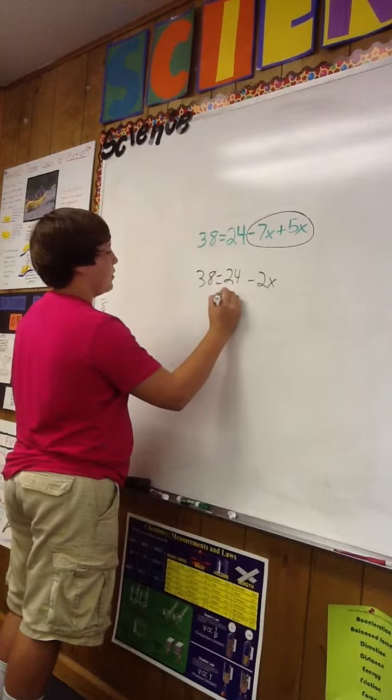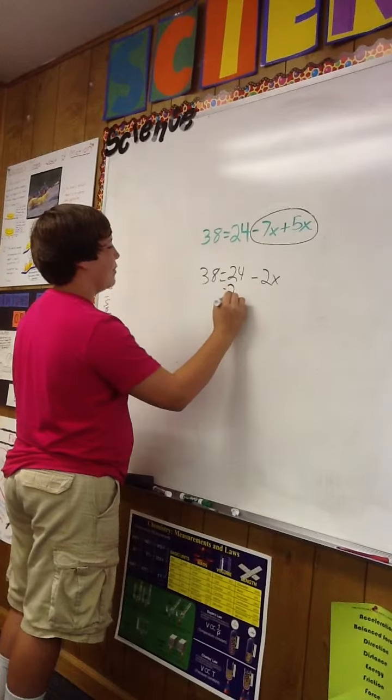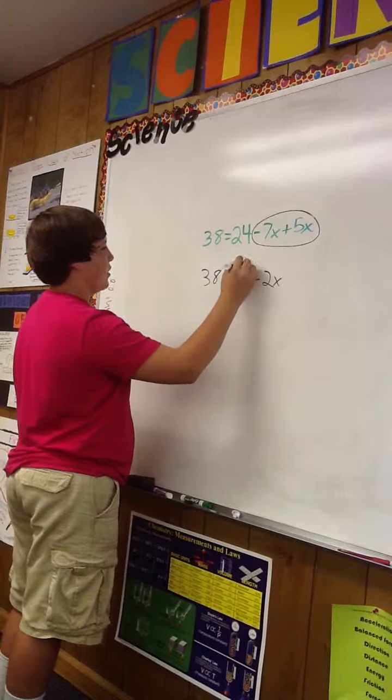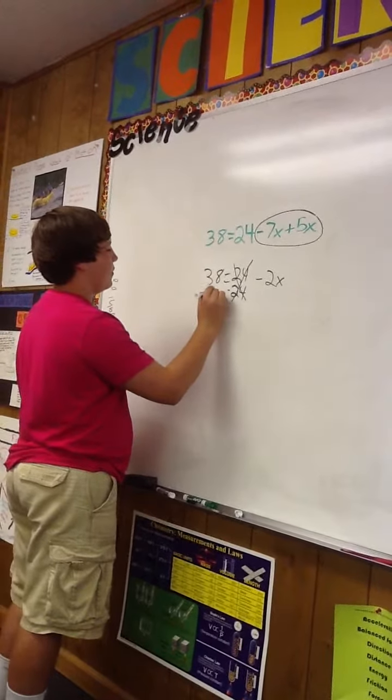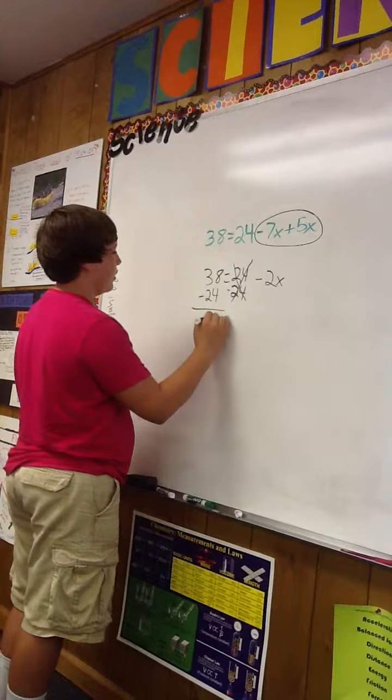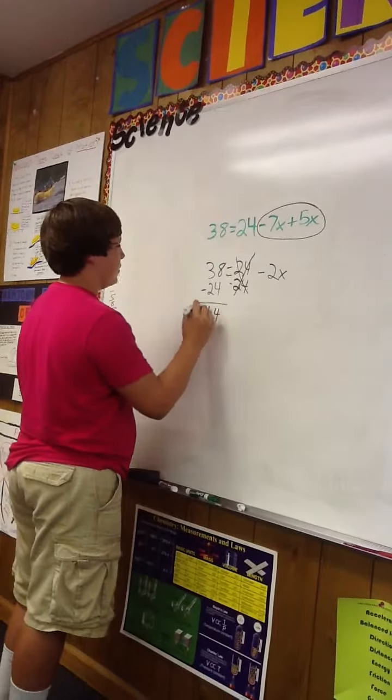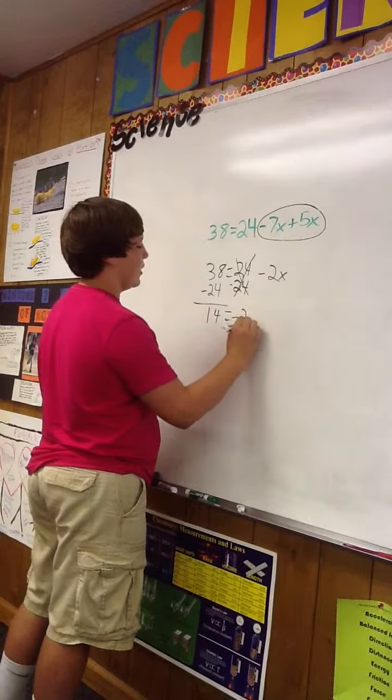subtract, use inverse operation to cancel it out, and subtract 24 from this side. That equals 14 equals negative 2x.